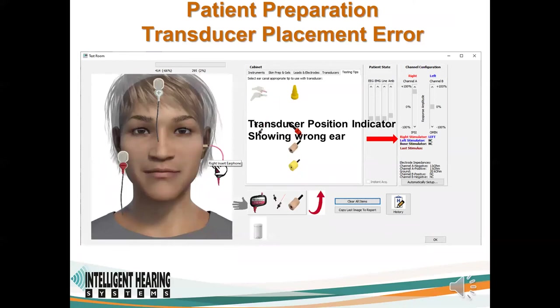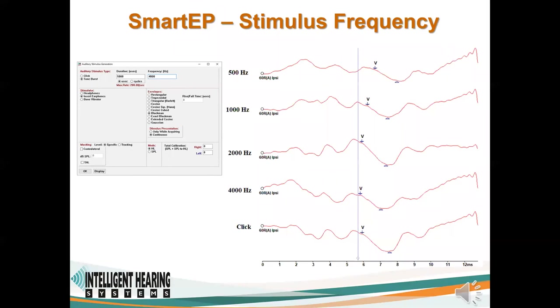If a transducer is placed in the wrong ear — a common error — the corresponding recorded data will originate from the ear where the transducer is placed. Using SmartEP, students can learn how to record data using clicks or specific tones.